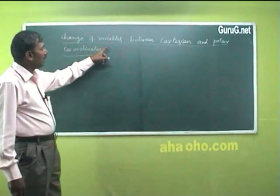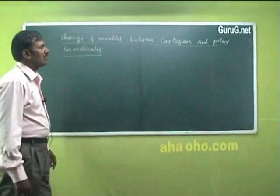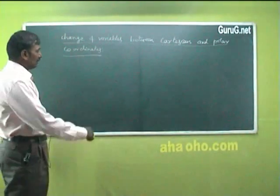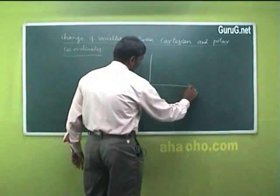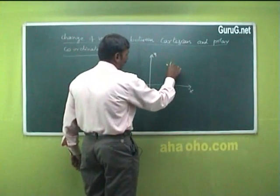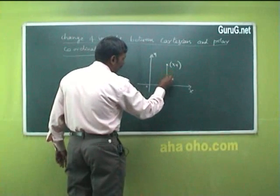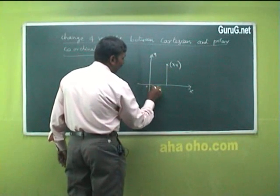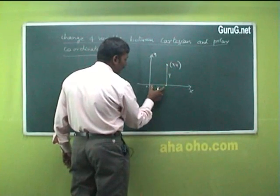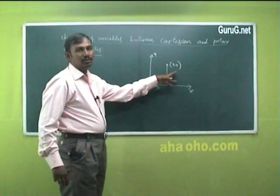The next topic is the change of variables between Cartesian and Polar coordinates. Suppose this is the x-axis and this is the y-axis. Suppose you have to plot a point x, y. The point x, y is the x distance from the origin and a particular y distance. Whenever this x distance and y distance are known, we can plot this point x, y. So these are Cartesian coordinates.